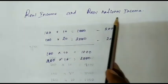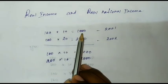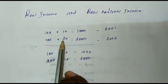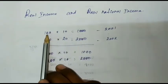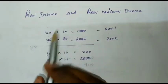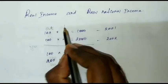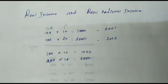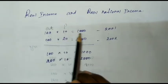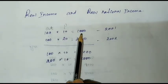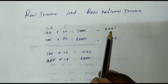Real national income — how to identify. For example: 100 output multiplied by price 10 equals 1000 in 2001. In 2002, 100 output multiplied by price 20 equals 2000. Output 100 multiplied by price $1 equals $1000, compared to $2000.